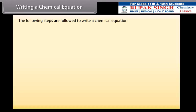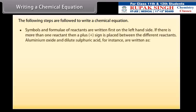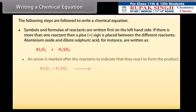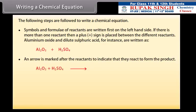The following steps are followed to write a chemical equation. Symbols and formulae of reactants are written first on the left-hand side. If there is more than one reactant, then a plus sign is placed between the different reactants. Aluminum oxide and dilute sulfuric acid, for instance, are written as Al2O3 plus H2SO4. An arrow is marked after the reactants to indicate that they react to form the product.